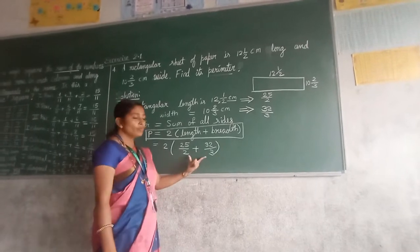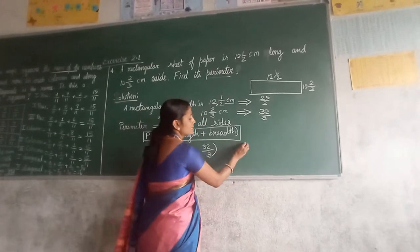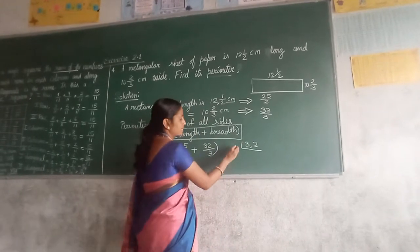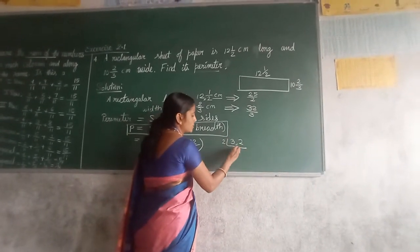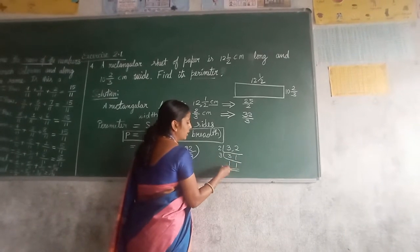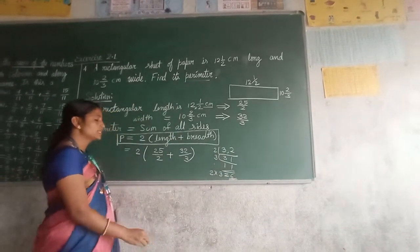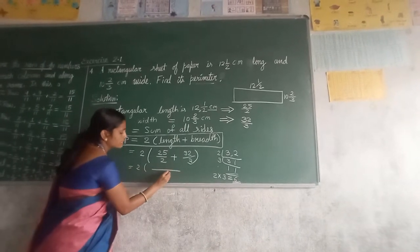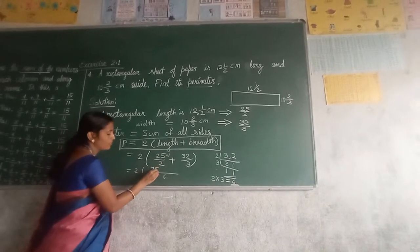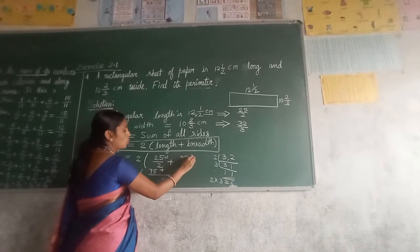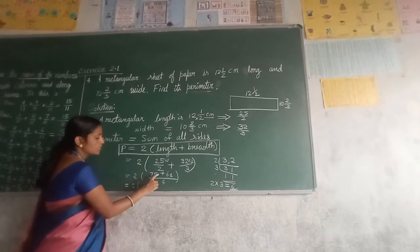Now let us take down that as length. 25 upon 2 plus 32 upon 3. Now you have to do the addition. Before going to do the addition, you have to check whether the denominators are same. No. So what we can do, let us take the LCM. We have to start with the prime numbers. 2, 3. You have to multiply. You will get the LCM 6. Now let us continue with the LCM 6. 2 times 3 is 6, so 25 times 3 is 75. Plus 3 times 2 is 6, so 32 times 2 is 64.